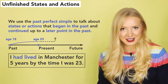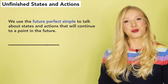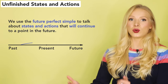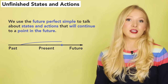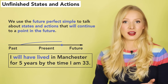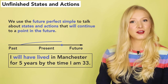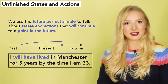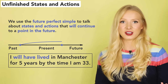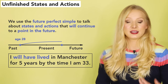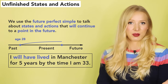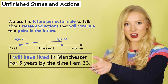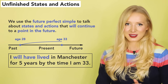We use the future perfect simple to talk about states and actions that will continue to a point in the future. For example: I will have lived in Manchester for five years by the time I'm 33. In this sentence, the starting point for living in Manchester is age 28, which is in the past. Five years later, I will be 33 and still living in Manchester.